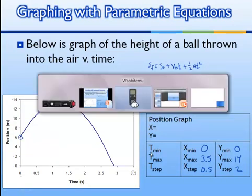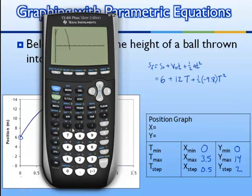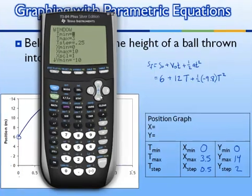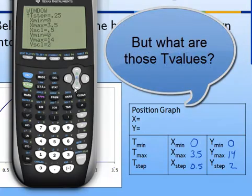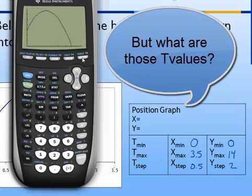If we go back to our calculator now and press the window button, we can make those adjustments. We'll put zero for Xmin, 3.5 for Xmax, and 0.5 for Xstep. And we'll put zero, 14, and 2 for the Y variables. Now if we hit graph, you'll see that the graph looks much more like we had before.